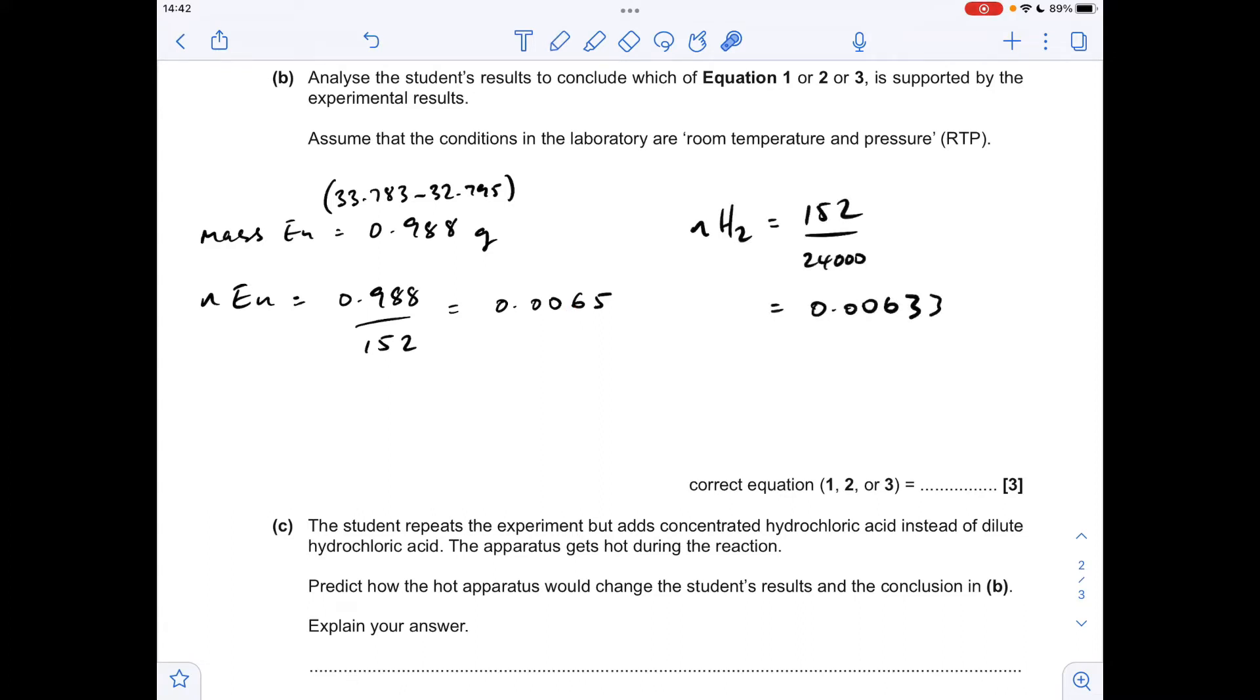And then moving on to the moles of hydrogen, so 152 cm cubed were collected and we're assuming that the conditions are RTP. So if we divide that by the molar gas volume in centimeters cubed, 24,000, we can calculate the moles of hydrogen produced: 0.00633.